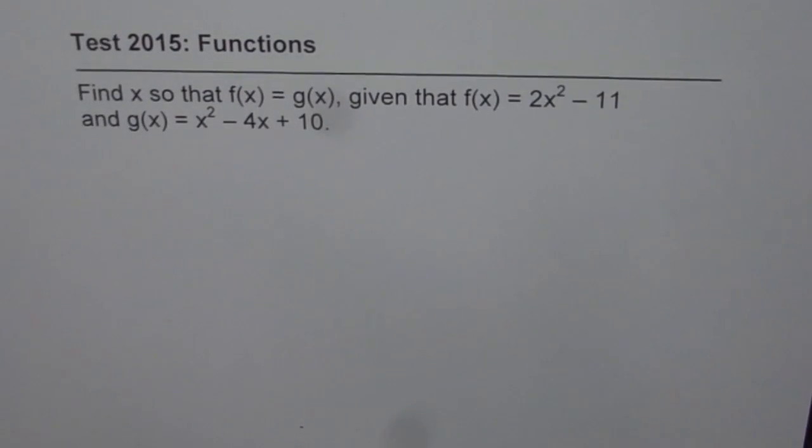Here is question number 3 from test 2015 on functions for grade 11. Find x so that f of x equals g of x, given that f of x equals 2x squared minus 11 and g of x equals x squared minus 4x plus 10.